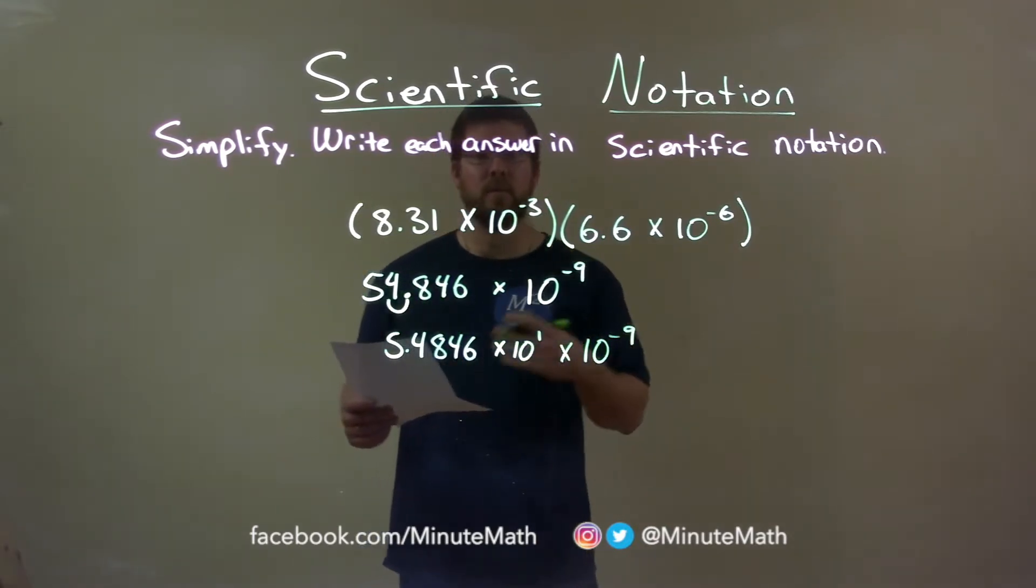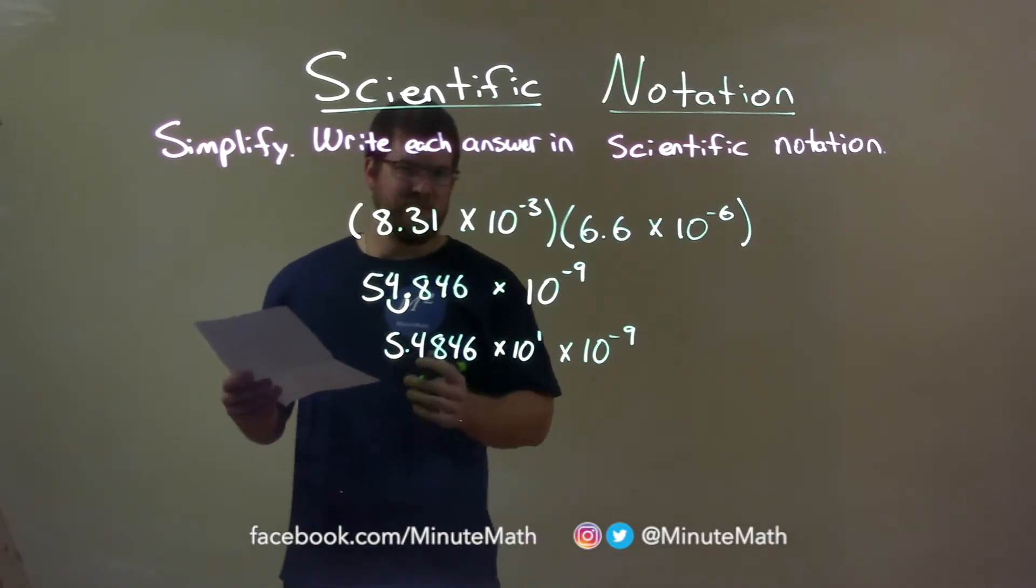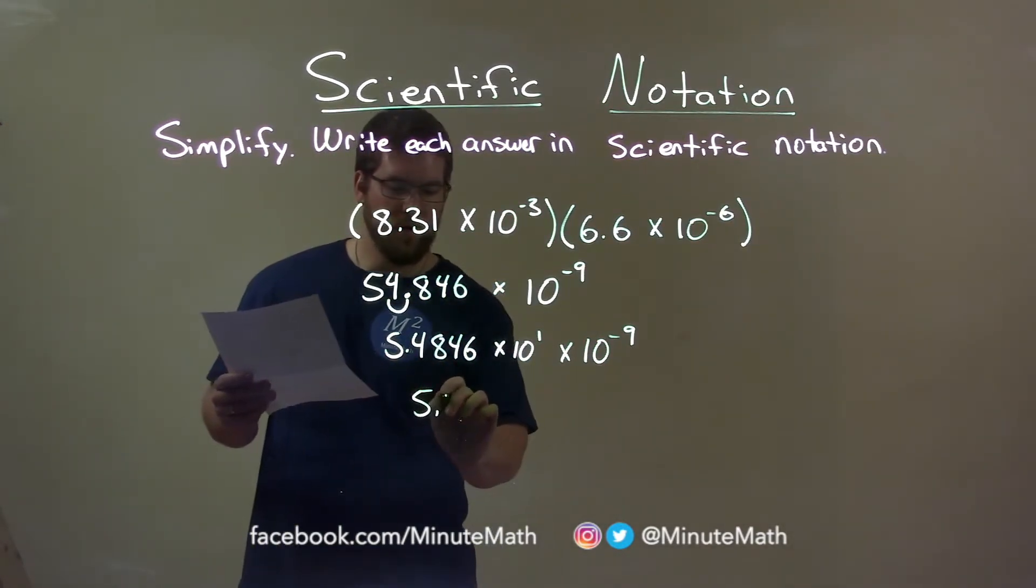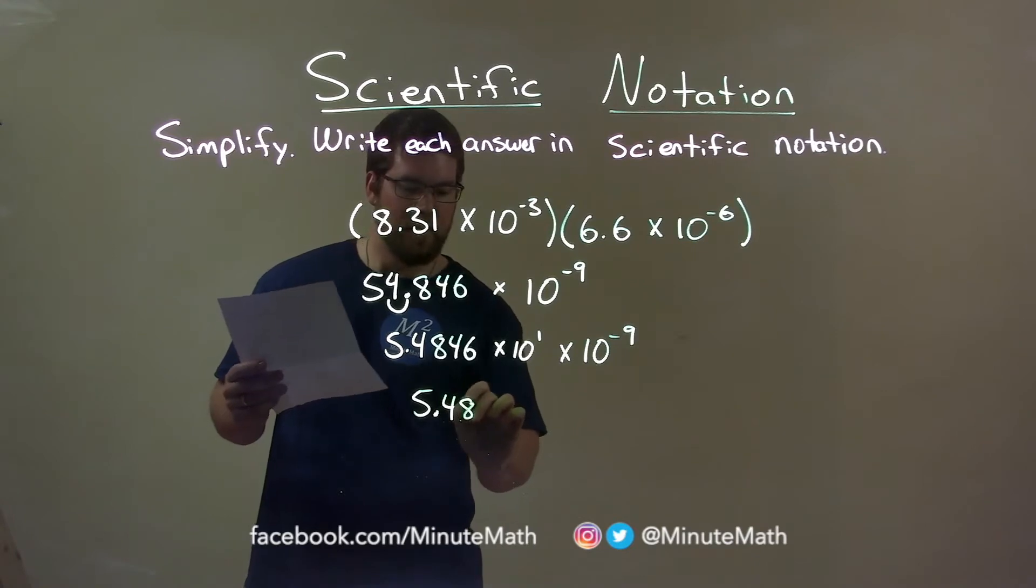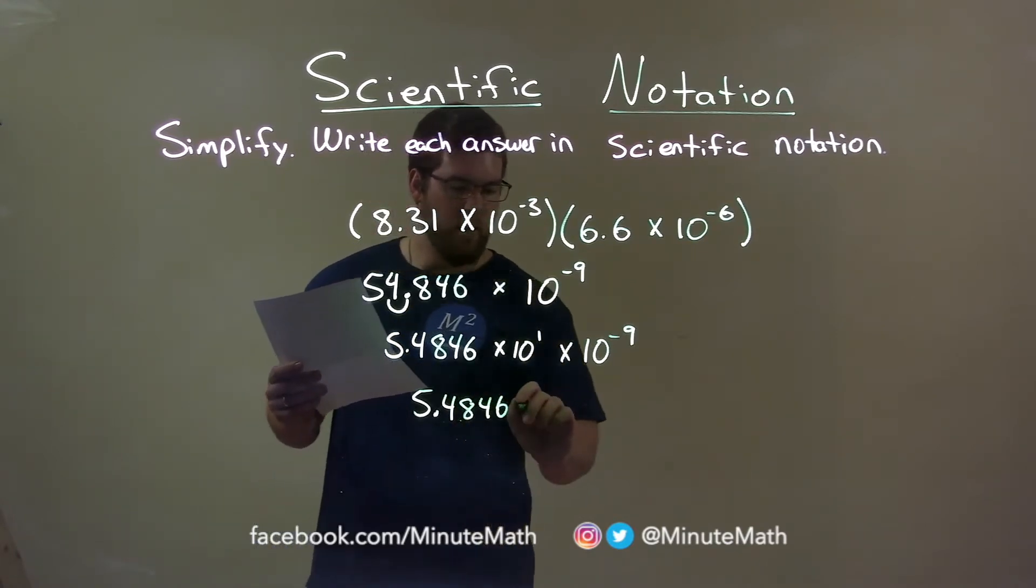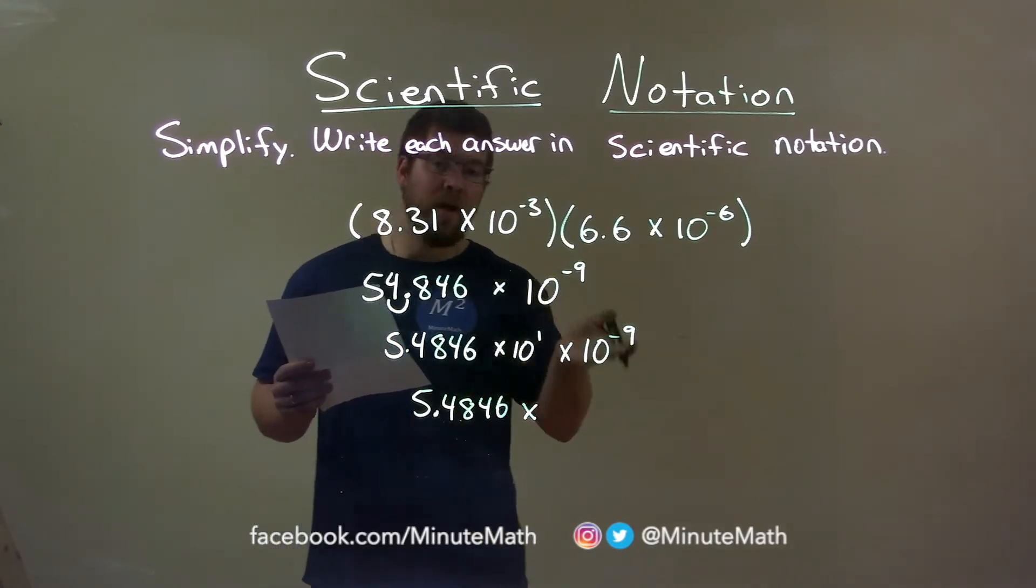Now let's continue our simplification. First number is fine. We have 5.4846 here, and we're multiplying this again. We add the exponents.